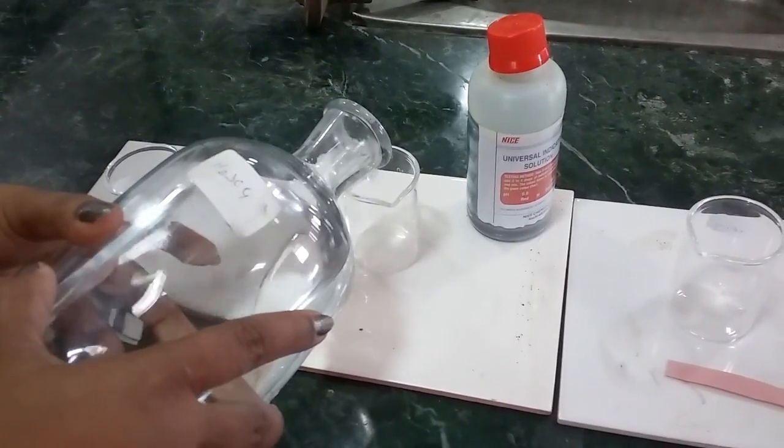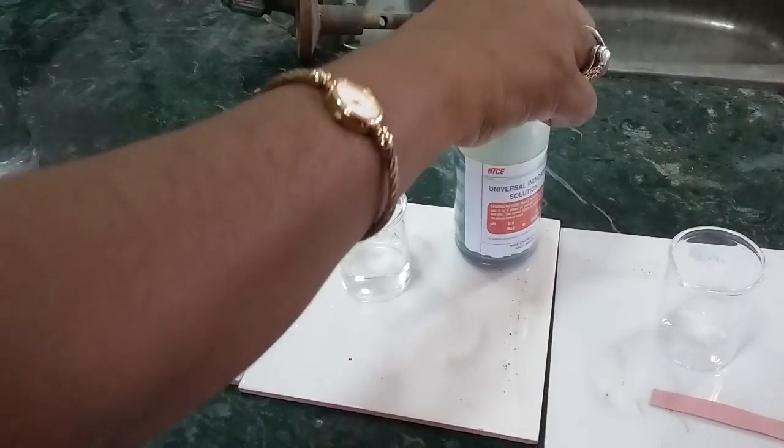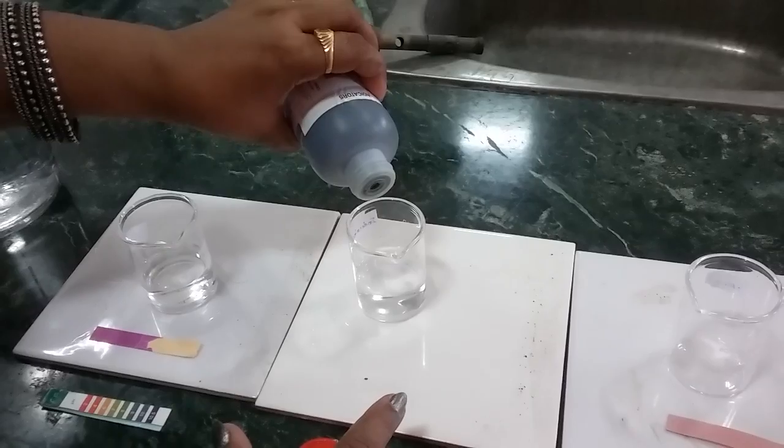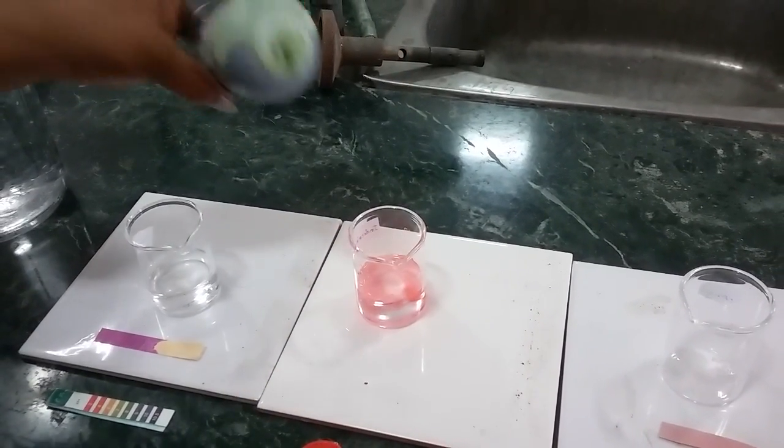Shall we test with the universal indicator too? Here I am going to test with the universal indicator. When I pour one or two drops into it, you can see the color again.